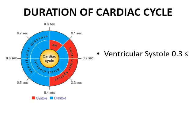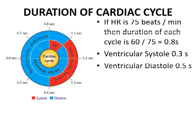The duration of each cardiac cycle is 0.8 seconds. The normal heart rate is 75 beats per minute, or 75 beats in 60 seconds. To find the duration of each beat, we divide 60 by 75, giving us 0.8 seconds. Out of these 0.8 seconds, the duration of ventricular systole is 0.3 seconds and ventricular diastole is 0.5 seconds. A question: when the heart rate increases, is it beneficial? I will answer that after explaining the duration of the different phases of the cardiac cycle.